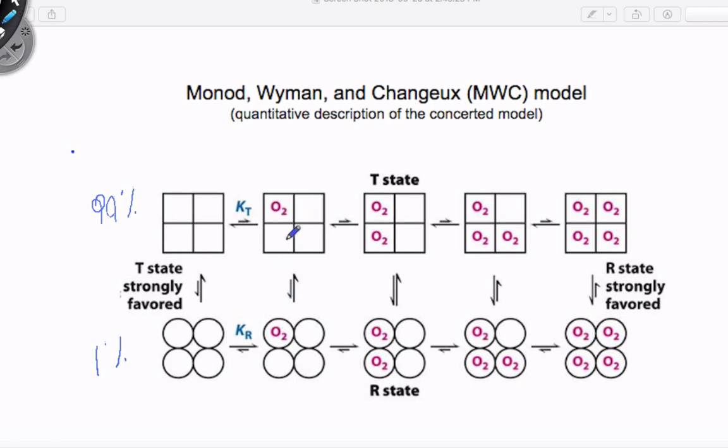And then when the next substrate binds, it's 50% in the T and then 50% in the R. The whole enzyme here, I'm not talking about subunits, I'm saying the probability, like in quantum mechanics, the probability of what we observe is present here.